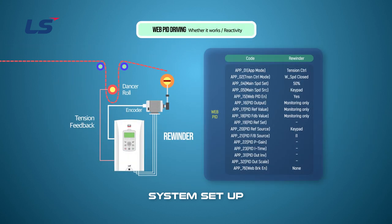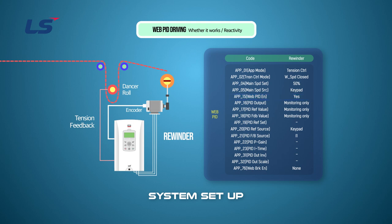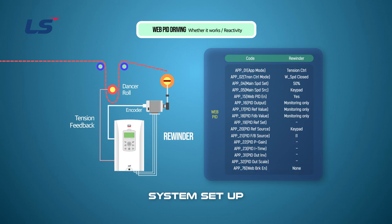Only the rewinder performs web control for trial operation. Set the main speed source of APP group number 5 to keypad and enable web PID control. In order to check only the reactivity of web PID, the diameter calculation function and the disconnection detection function are deactivated, and then the test is conducted. If the disconnection detection function is not disabled, a warning message will be issued because there is no load at this stage. PID-related parameters must be set to optimize the reactivity of web PID.